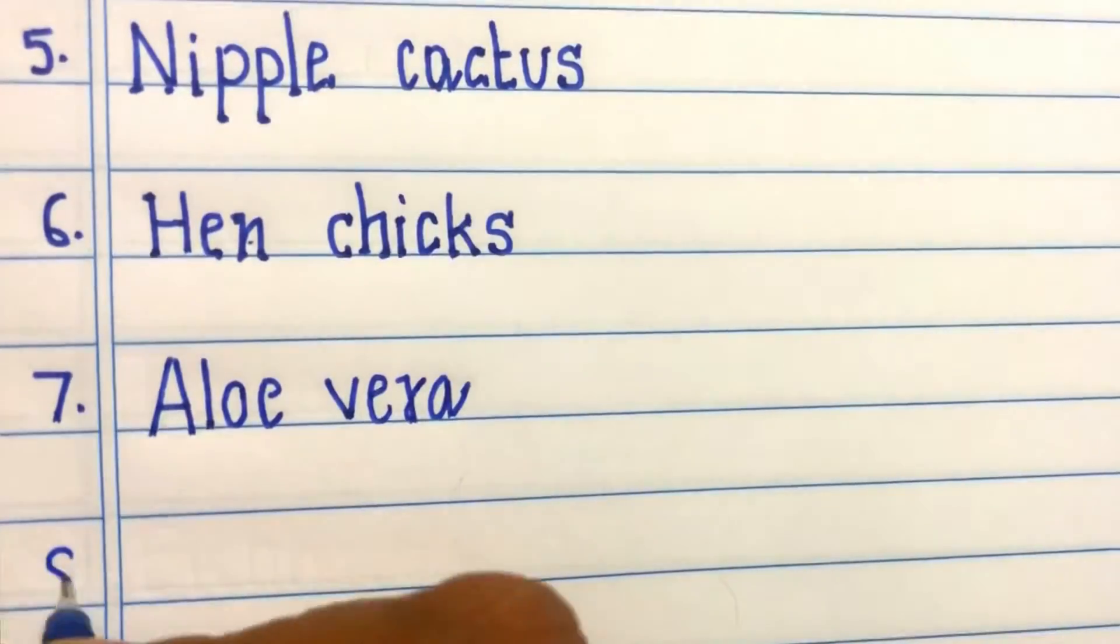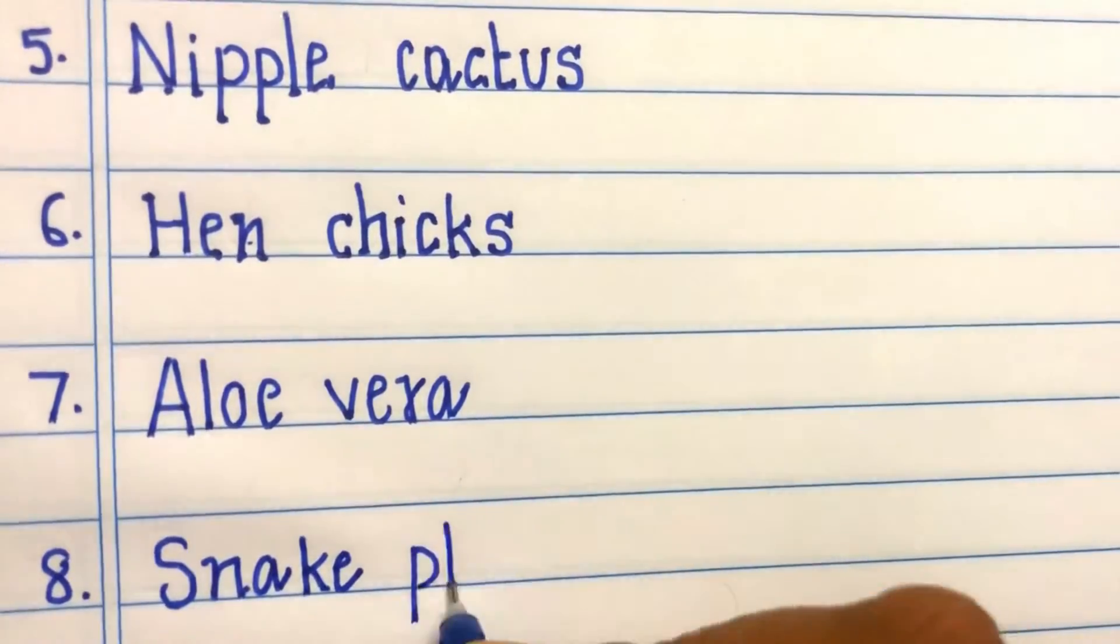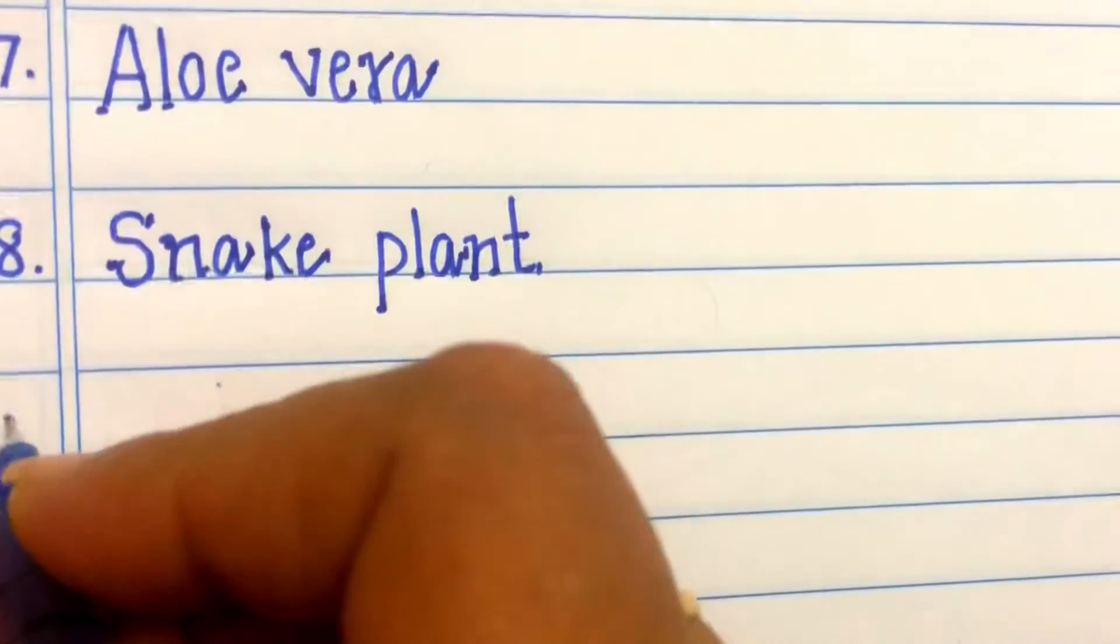Seventh one: Aloe Vera, A-L-O-E-V-E-R-A, Aloe Vera. Eighth one: Snake Plant, S-N-A-K-E-P-L-A-N-T, Snake Plant.